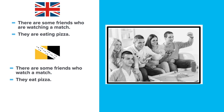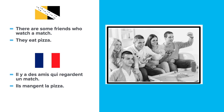Another example: 'There are some friends who are watching a match. They are eating pizza.' Norfolk step: 'There are some friends who watch a match. They eat pizza.' Translation: 'Il y a des amis qui regardent un match. Ils mangent la pizza.' Again, we haven't got any of the extra 'is's', 'are's' or '-ings' that we would have if we translated directly from standard English. So hopefully this has got us into that mindset of changing how we approach the translation before we try to do it, by putting in that additional Norfolk-y step.